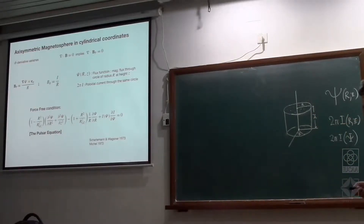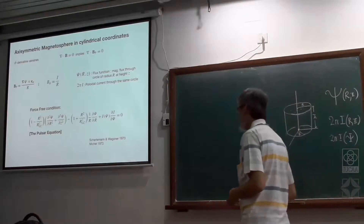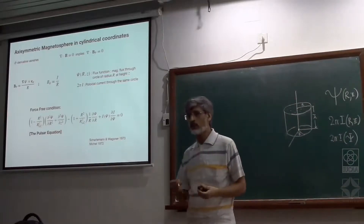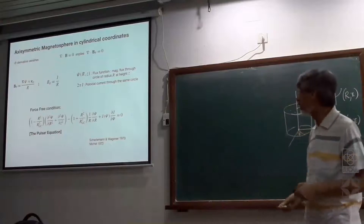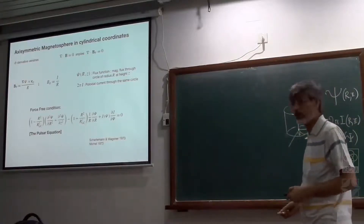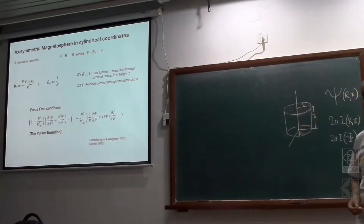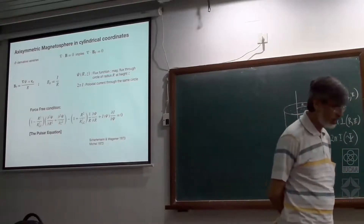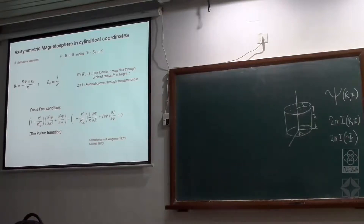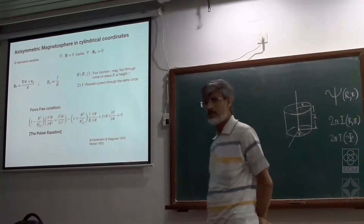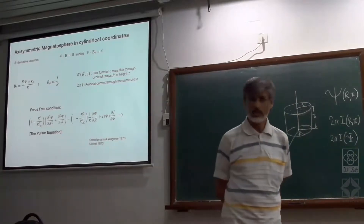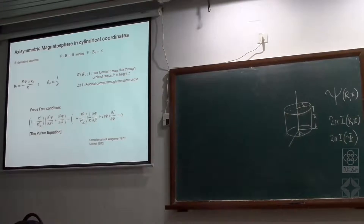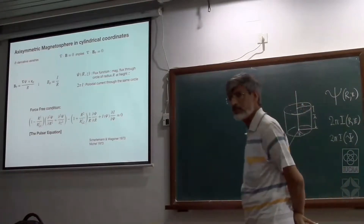Since the rotating force-free magnetosphere is what is thought applicable to pulsars, this equation goes by the name the pulsar equation. It is written in cylindrical polar coordinates, but coordinate transformation is easy — you can always write it in terms of spherical polar coordinates, with derivatives in R and θ. There is no φ derivative even in those coordinates.